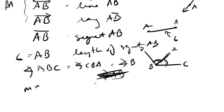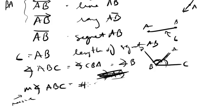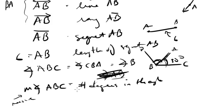If you see a little M before the angle notation — measure of ABC — this stands for measure. Just like with the length of a segment, you just want the number of degrees in the angle. So in this case, if the angle was 30 degrees, the measure of ABC would be 30 degrees.